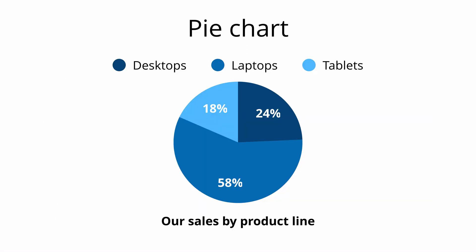Our next chart is the pie chart. This one should look very simple compared to the Marimekko chart we just covered. The pie chart represents 100% of our total sales, and each slice represents the proportion of total sales each product accounts for. You'll notice that the pie chart provides the exact same information as a 100% stacked bar chart.